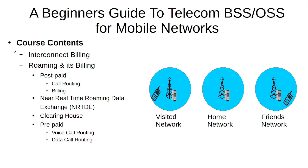Then we discuss how interconnect billing takes place for a call between subscribers of different communication service providers, and how roaming works in mobile networks and how billing of roaming is done. We cover the postpaid scenario — how call routing and billing is done for a postpaid call during roaming — the importance of near real-time roaming data exchange and the clearing house, and how voice call routing and data call routing take place for a prepaid call during roaming.